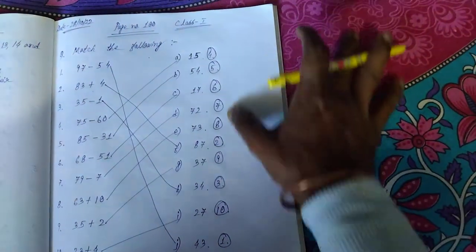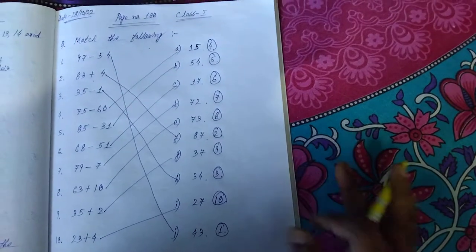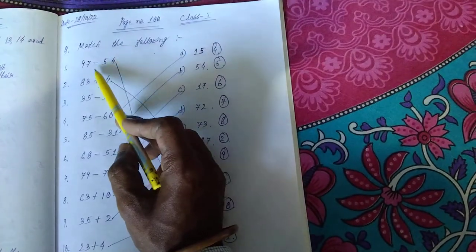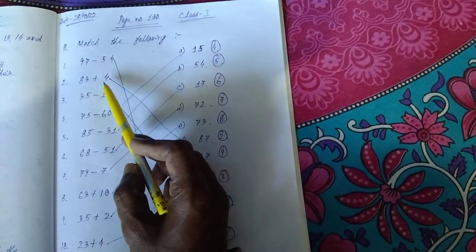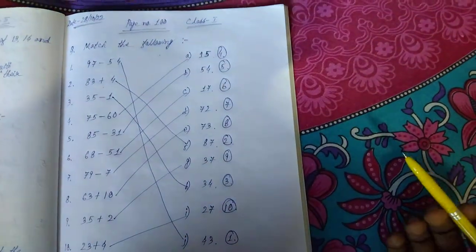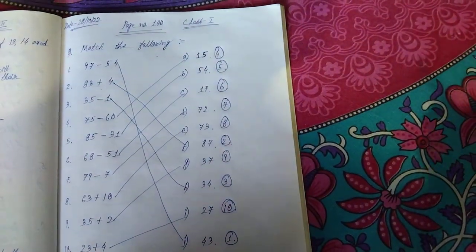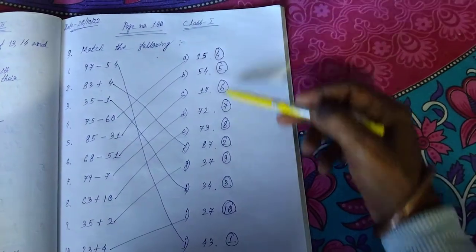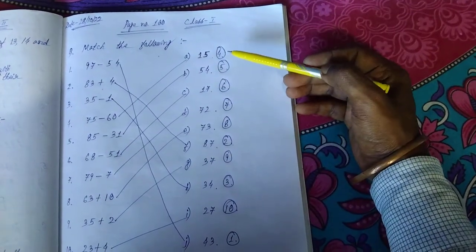These are very easy. Just you need to subtract the numbers, and where addition is given, you need to add first. Then you will get the result, and the result whatever you are getting, you will have to look for the result over here.